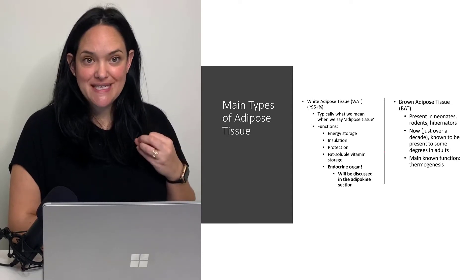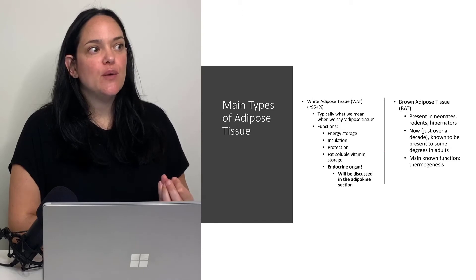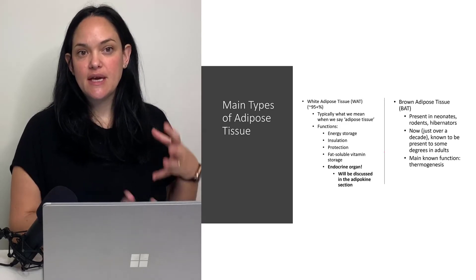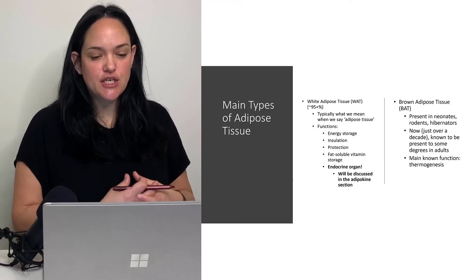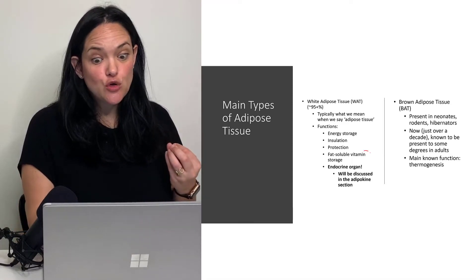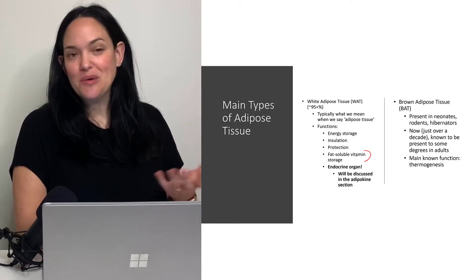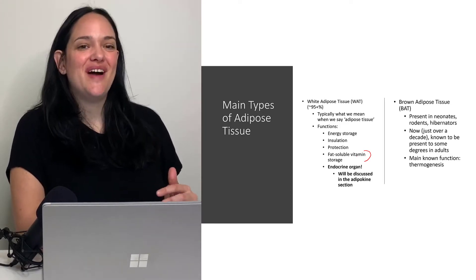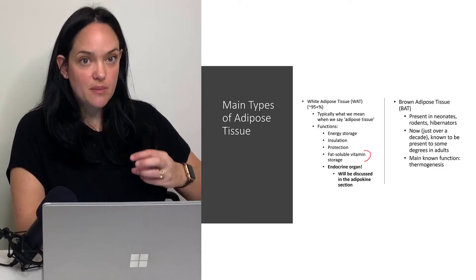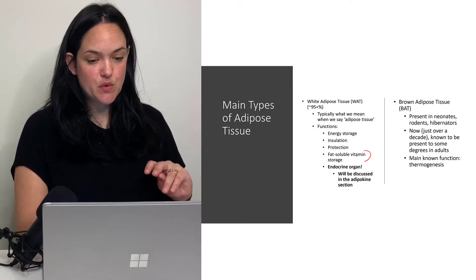Adipose tissue also provides insulation. You'll also notice it around major organs like the heart and the kidney as protection and insulation in those areas. It's also really important for fat-soluble vitamin storage. We typically don't recommend a very low fat diet because you do need lipids to bring fat-soluble vitamins into the body and to store them as well.